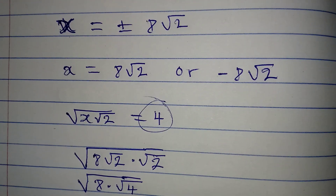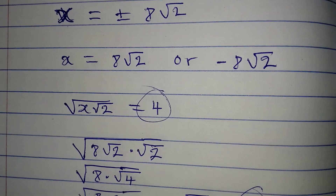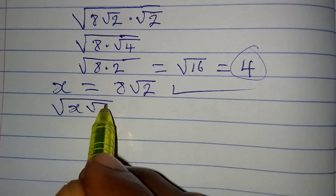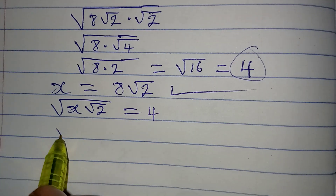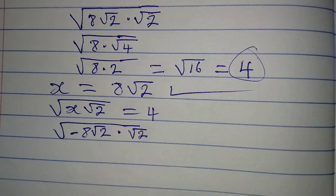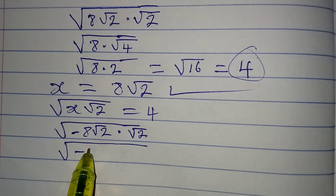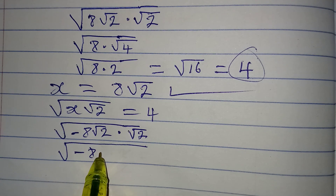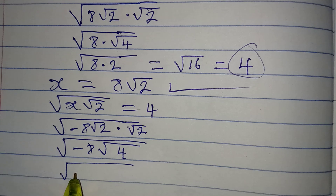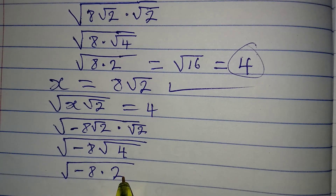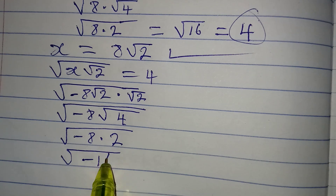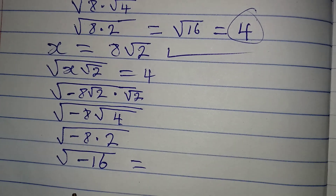Now if I pick the second value, x equals minus 8 root 2, let's see how it won't satisfy the given equation. The original equation is x root 2 equals 4, and our x is minus 8 root 2, multiplied by root 2. So I have negative 8, then root 2 times root 2 is root 4 like before, giving minus 8 times 2, because square root of 4 is 2.